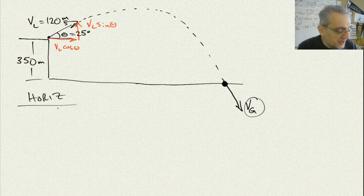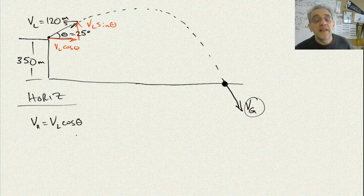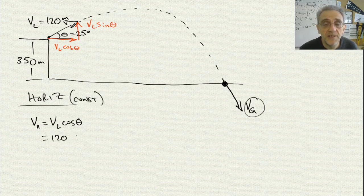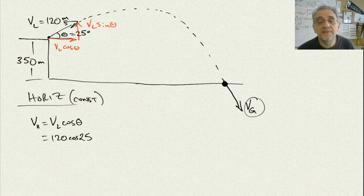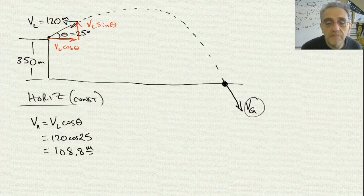For horizontal, V horizontal is equal to VL cosine theta, and it's constant because horizontally there's no gravity, so it's constant velocity. Therefore it's just 120 times cosine 25, and our answer is 108.8 meters per second.